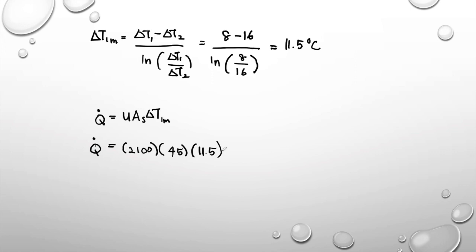Please remember that when you substitute the values, check for kilo prefixes — whether it is joule per second or kilojoule per second. The kilo means you have to multiply by 10³. If you do not convert the units correctly, you will get the wrong values. The result for Q̇ is 1,087 × 10³ W (kilowatts).